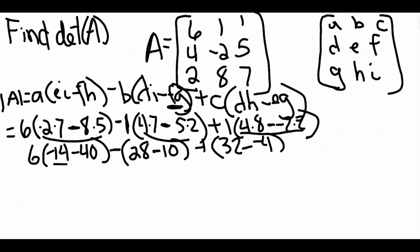Now let's take care of the subtractions within each group. Negative 14 minus 40 is negative 54, 28 minus 10 is 18, and 32 minus negative 4, being careful with that double negative rule, gives us 36.